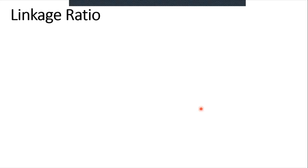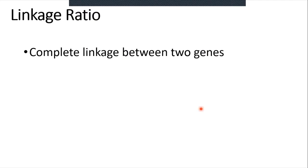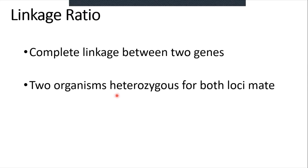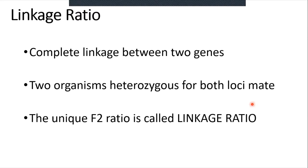We will learn another term: linkage ratio. Genes on the same chromosome are called linked genes, and the situation is called linkage. When two heterozygous organisms mate, the unique F2 ratio that results is called the linkage ratio. Complete linkage means no crossing over between the two genes.